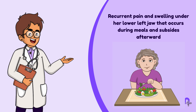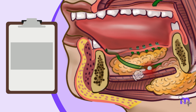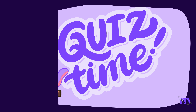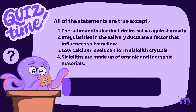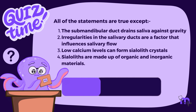Today let us explore sialography in detail with the help of a demonstration of how it is performed. Let us take the case of a patient who complains of recurrent pain and swelling under her lower left jaw that occurs during meals and subsides afterwards. This suggests a potential blockage in the duct, making sialography a good option to identify the issue.